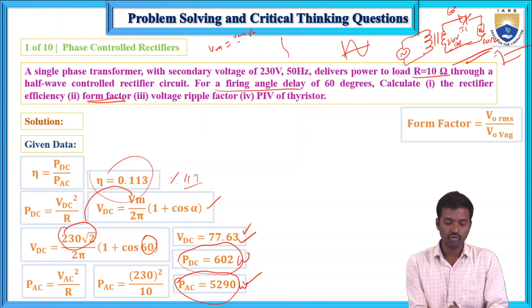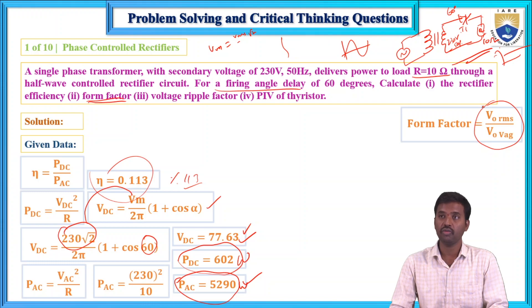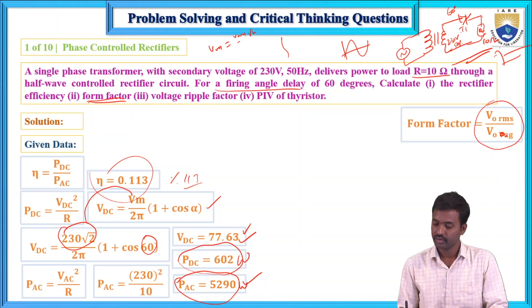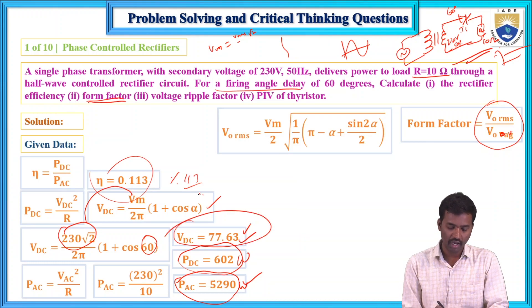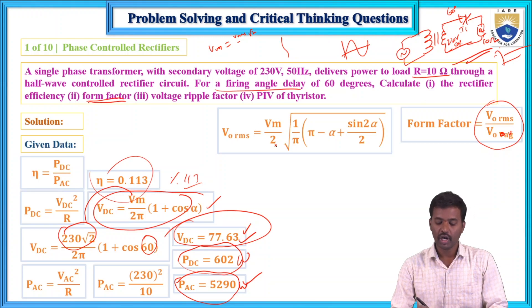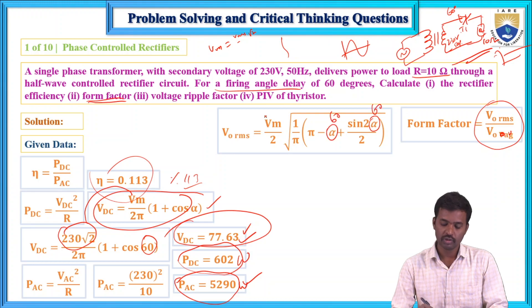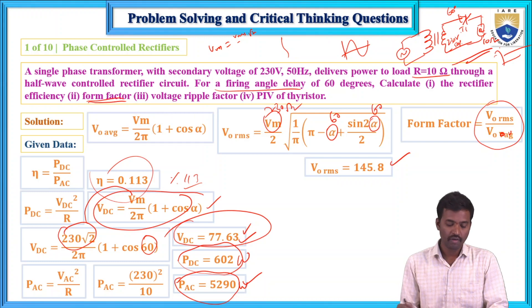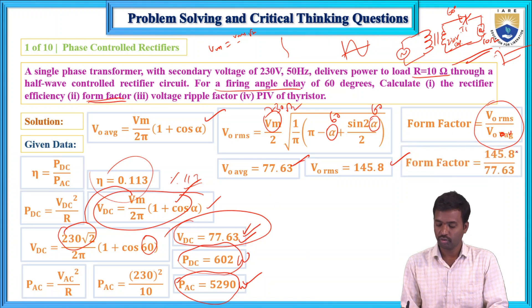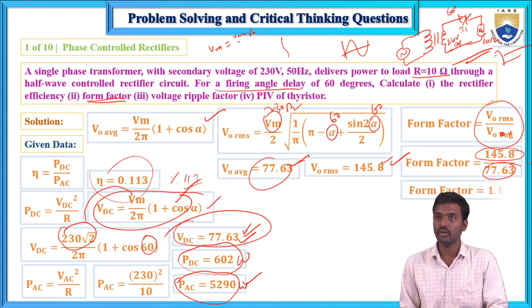For the form factor: form factor equals the ratio of RMS value to the average value of output voltage, that is V_RMS divided by V_avg. The RMS value formula for a half-wave rectifier is: V_RMS = (Vm / 2) × √[(1/π)(π − α + sin2α / 2)], with α equals 60 degrees and Vm equals 230√2. This gives V_RMS equals 145.8 volts. With V_avg equals 77.63 volts, form factor equals 145.8 / 77.63 equals 1.81.